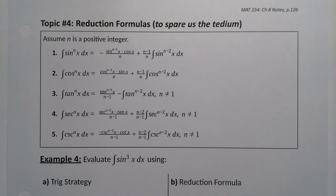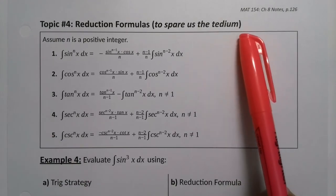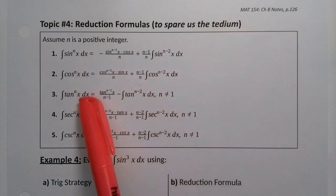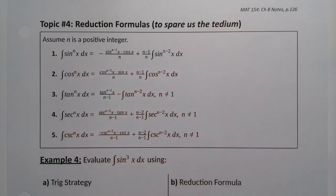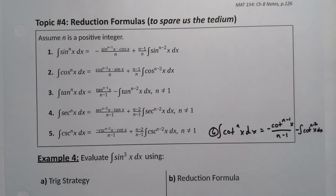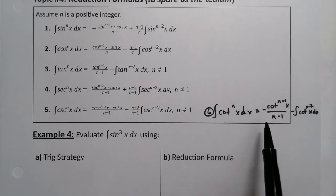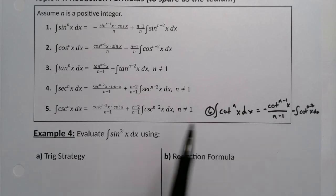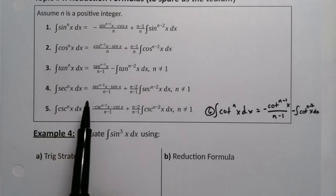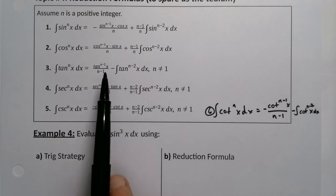The book kindly provides reduction formulas for powers of trig functions, which spares us the tedium of working through these integrals manually. The one we just did was similar to the cotangent case. There should be a sixth formula for cotangent - sine, cosine, tangent, secant, cosecant - and the cotangent one is actually very similar to the tangent one, just negative in front.